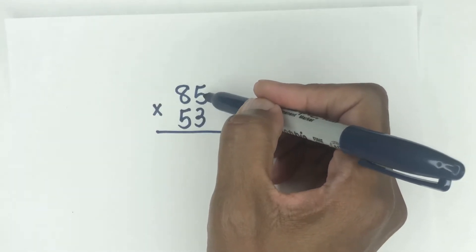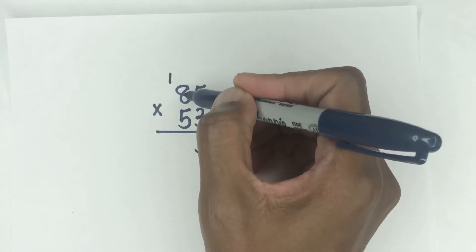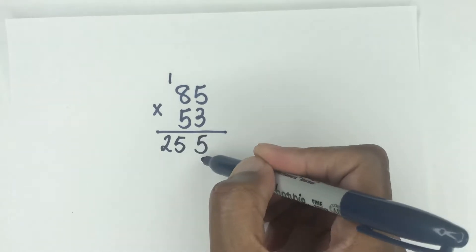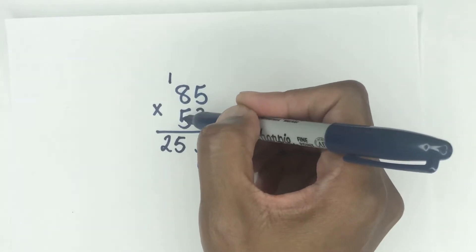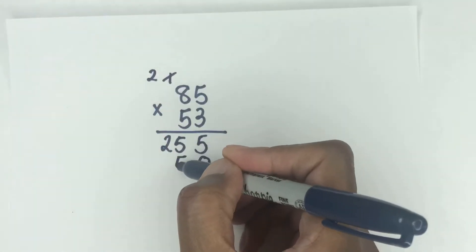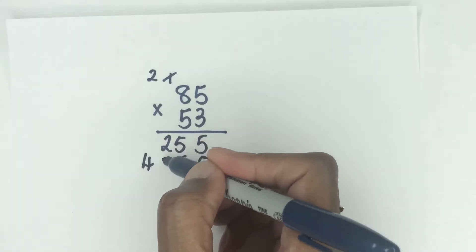So three times five is 15. So we regroup there. Three times eight is 24 plus that one gives you 25. We're going to block off the ones place and then five times five is 25. So we're going to regroup here.